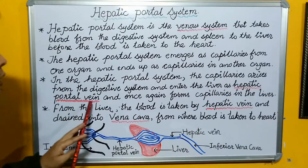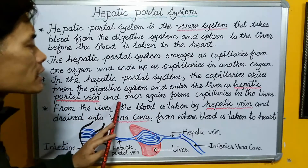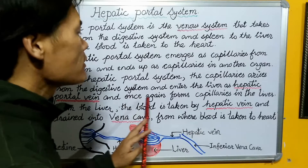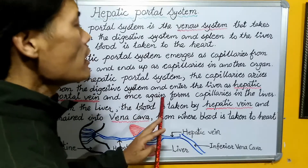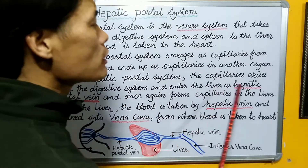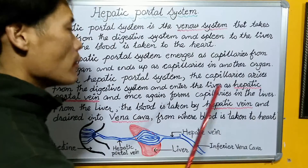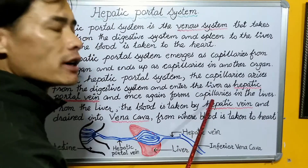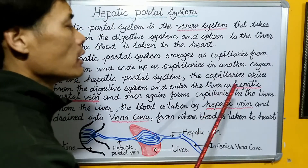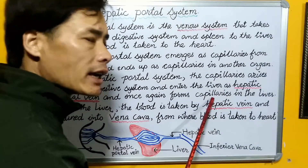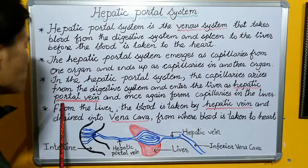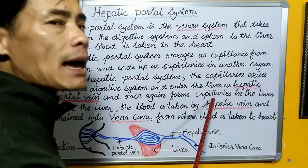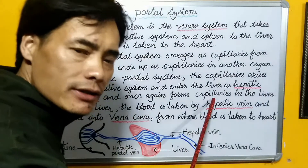This portal vein takes away blood from the digestive system and carries it to the liver. However, when it reaches the liver, once again the hepatic portal vein forms capillaries.